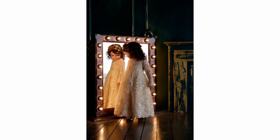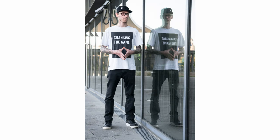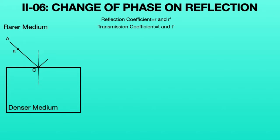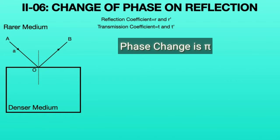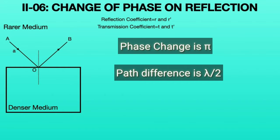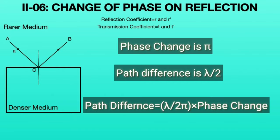This can be realized with a simple example: when we stand in front of a mirror, our left becomes right and our right becomes left. Due to reflection there is a phase change, and that phase change is π. A π phase difference corresponds to a λ/2 path difference; both are related to each other. Hence, this phenomenon is called phase change on reflection.